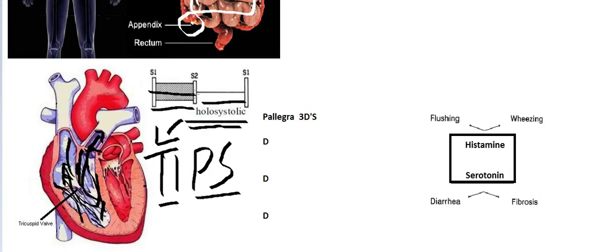The systemic symptoms are flushing and wheezing, which are because of increased histamine release. Histamine causes vasodilation in the arterioles, which causes the flushing symptoms. Histamine will also cause bronchoconstriction in the lung, which causes wheezing. And serotonin causes diarrhea and fibrosis.